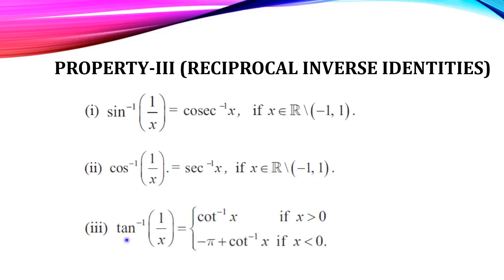The last reciprocal identity: tan inverse of (1/x) = cot inverse of x, if x > 0 (positive values). If x < 0 (negative), then tan inverse of (1/x) = −π + cot inverse of x.